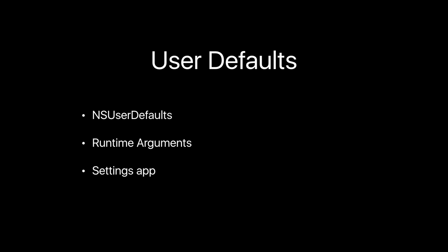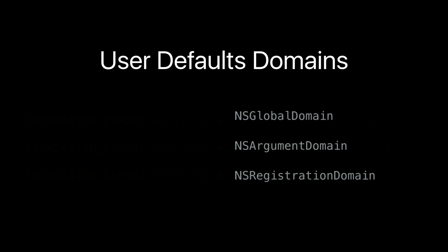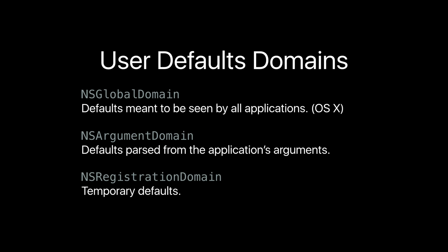There are runtime arguments — another place where user defaults can be set as part of a scheme's run environment. If you've used a command line application like git, that's like when you say `git --head` or `--force` — that's an argument. You can have arguments for your iOS application from within Xcode. And also the settings app: if you have a settings bundle, the settings app drives user defaults. All those options, settings, and toggles within the settings app get saved to user defaults, and when you open your app you read the user defaults and get the values from settings.